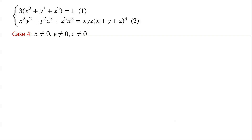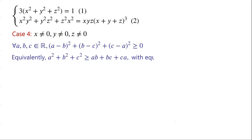Case four: none of x, y, z equals zero. We know that for all real numbers a, b, and c, (a − b)² + (b − c)² + (c − a)² is always greater than or equal to zero, with equality if and only if a equals b equals c. When we expand the left-hand side of the inequality, we have the equivalent form: a² + b² + c² is always greater than or equal to ab + bc + ca, with equality if and only if a equals b equals c.